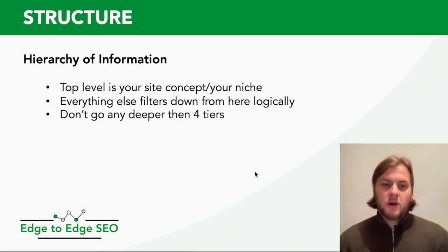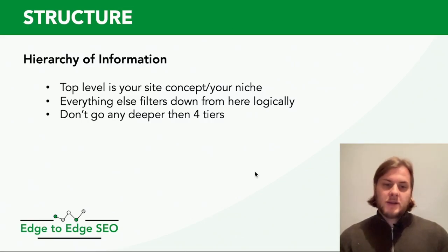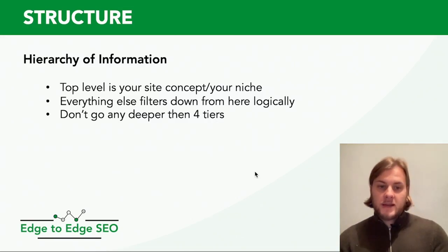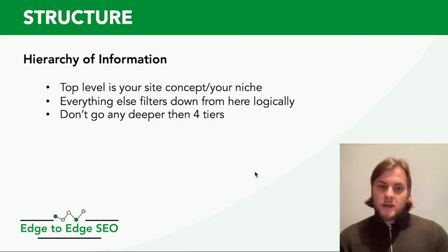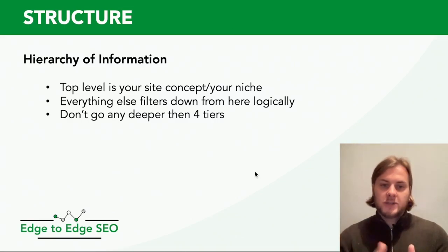You don't go any deeper than four tiers. You'd have your site concept — flooring — and from there you might go down to carpet as tier two. From carpet you might have stair runners as tier three, and you'd only go one deeper than that if you needed to. This gives you good depth of information and keeps your site structured logically.